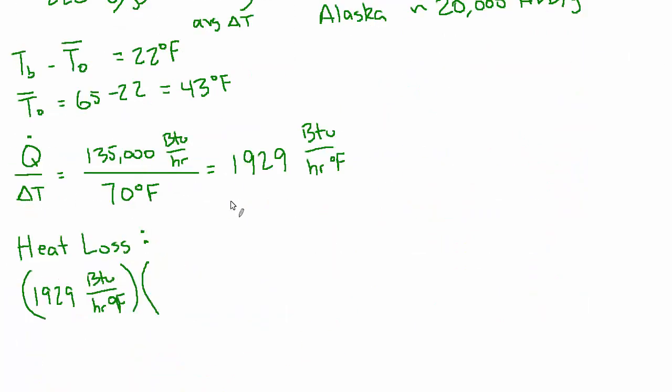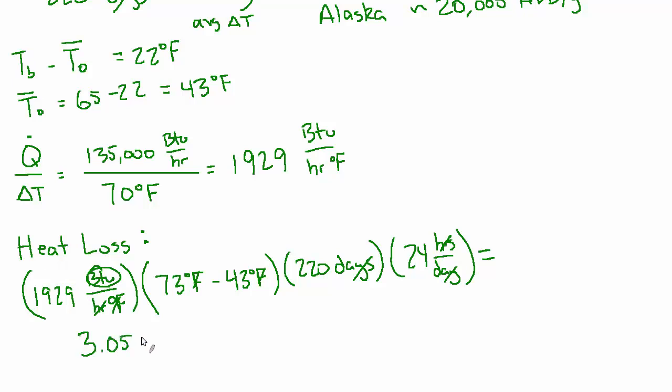The occupants have tampered with the heating controls, so they're actually running it at 73 degrees. That's the number we want to use for the inside temperature. And the average outside temperature is 43 degrees. So now our delta T is not 22, it's actually 30. It's a pretty significant difference. So that's going to get rid of degrees F. And now we want to multiply by the amount of time in the heating season, which is 220 days. And we can change that into hours, 24 hours per day. And days will go away. And hours will cancel. And we'll just be left with BTUs. And that comes out to 3.05 times 10 to the 8th BTUs. So 305 million BTUs is the total heat loss for the whole season. And that's answer A.